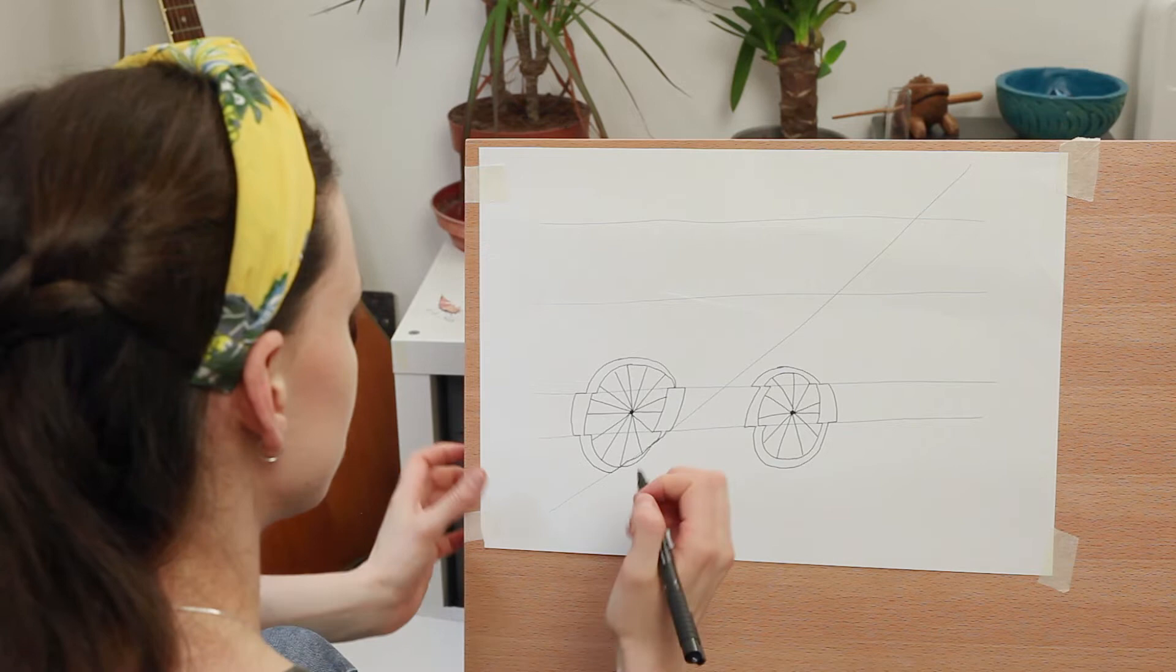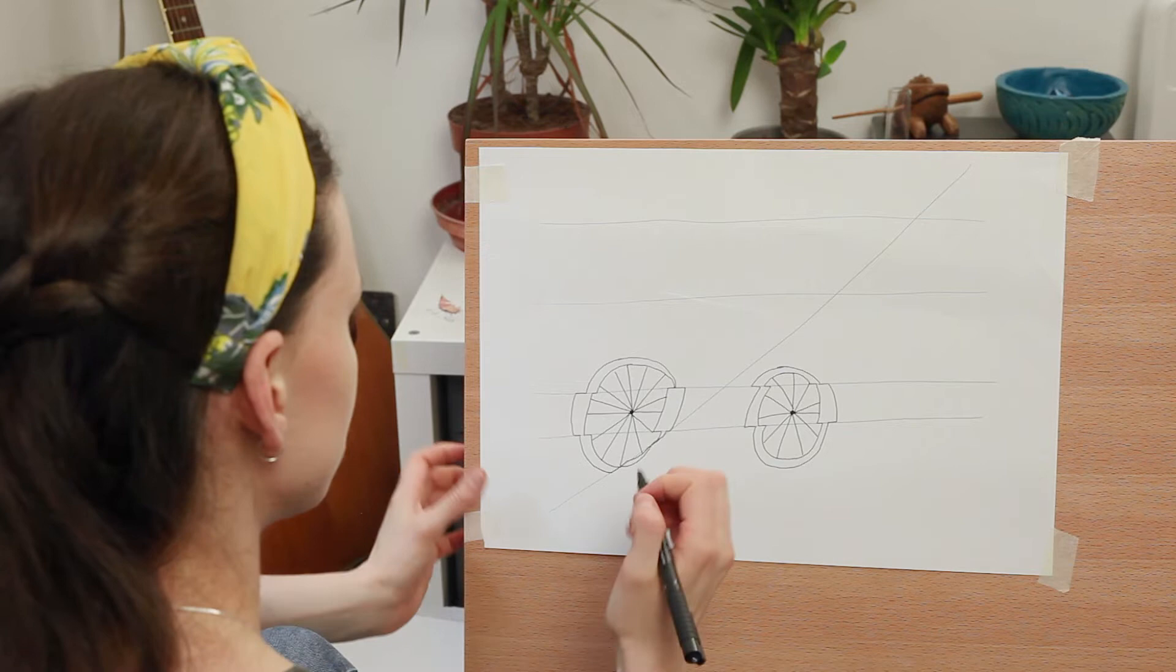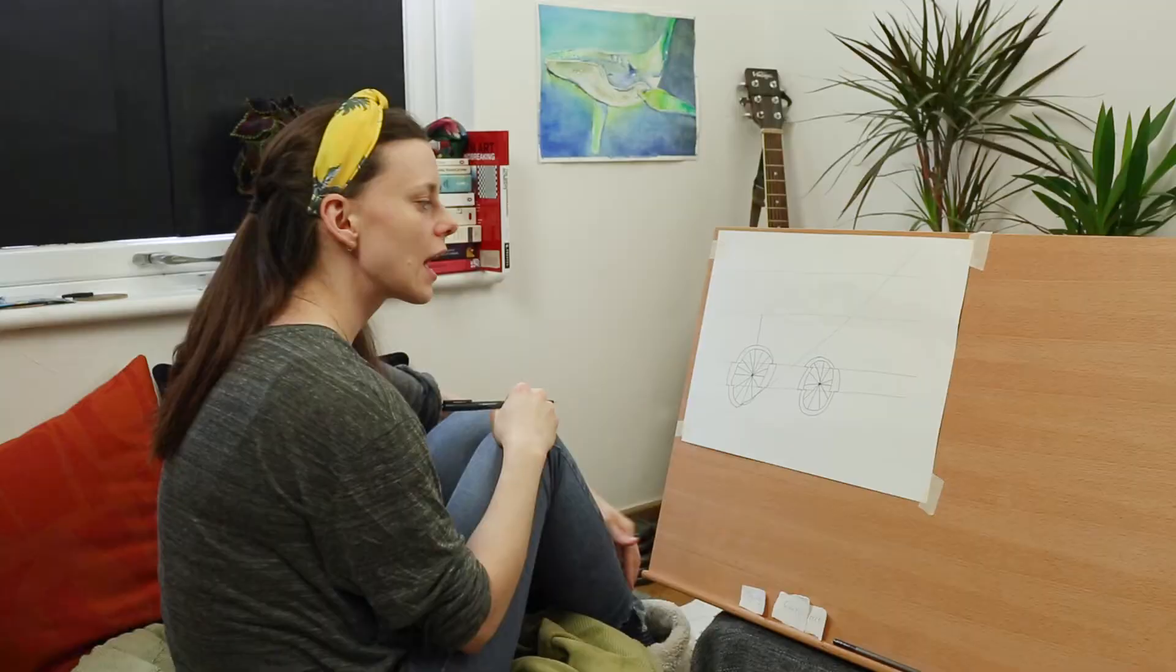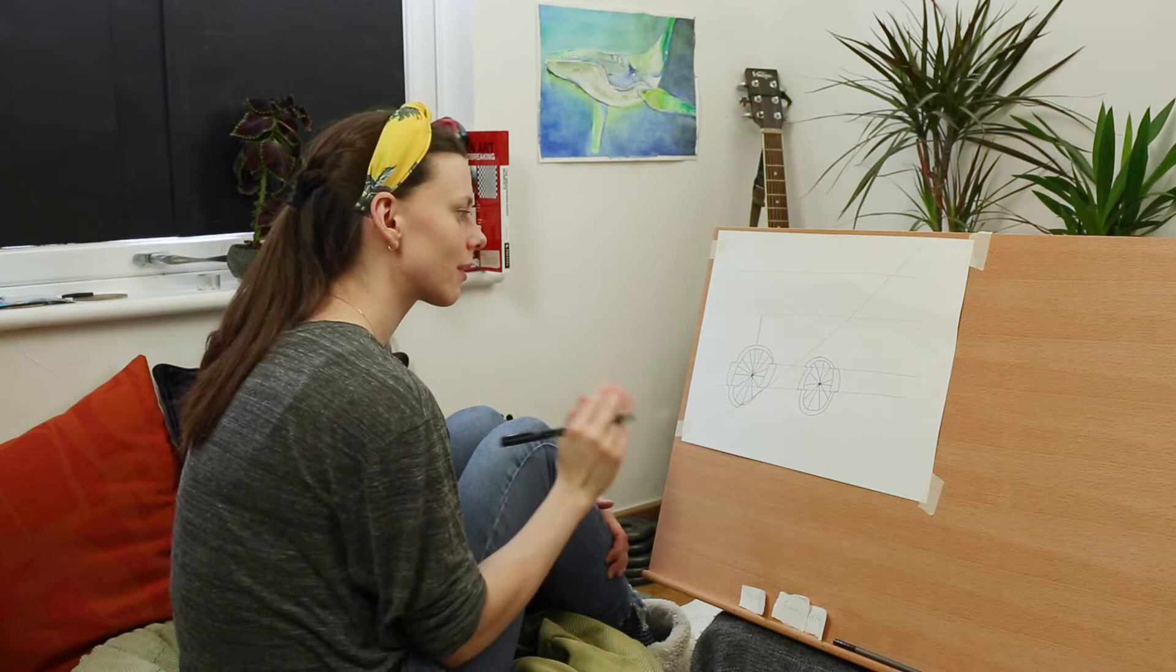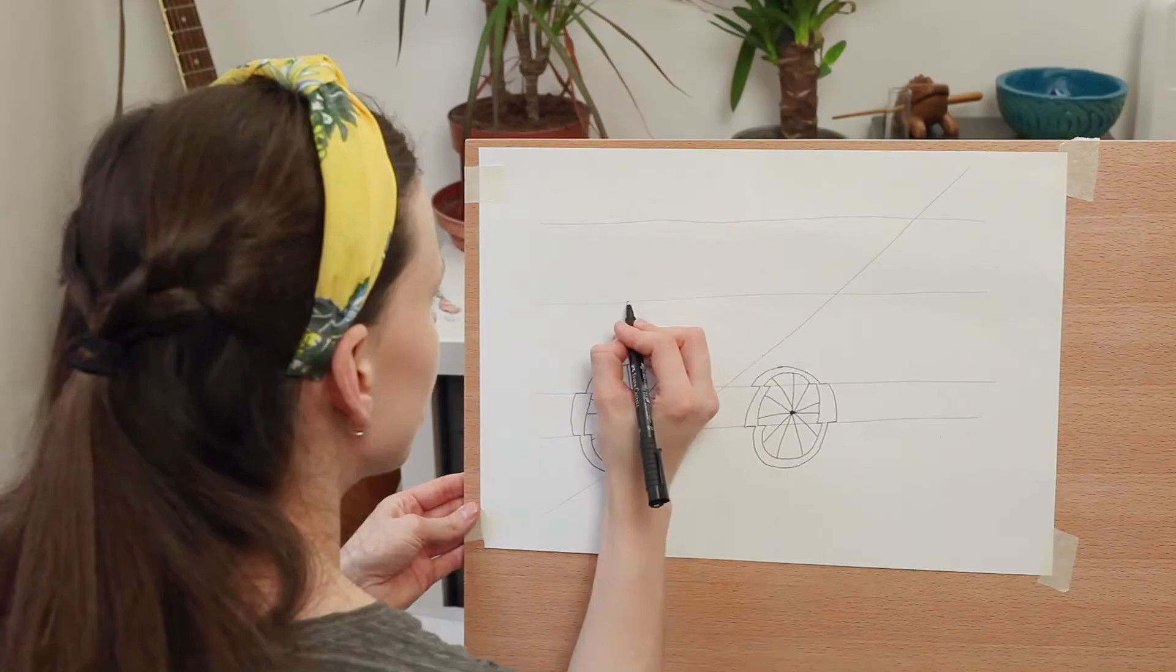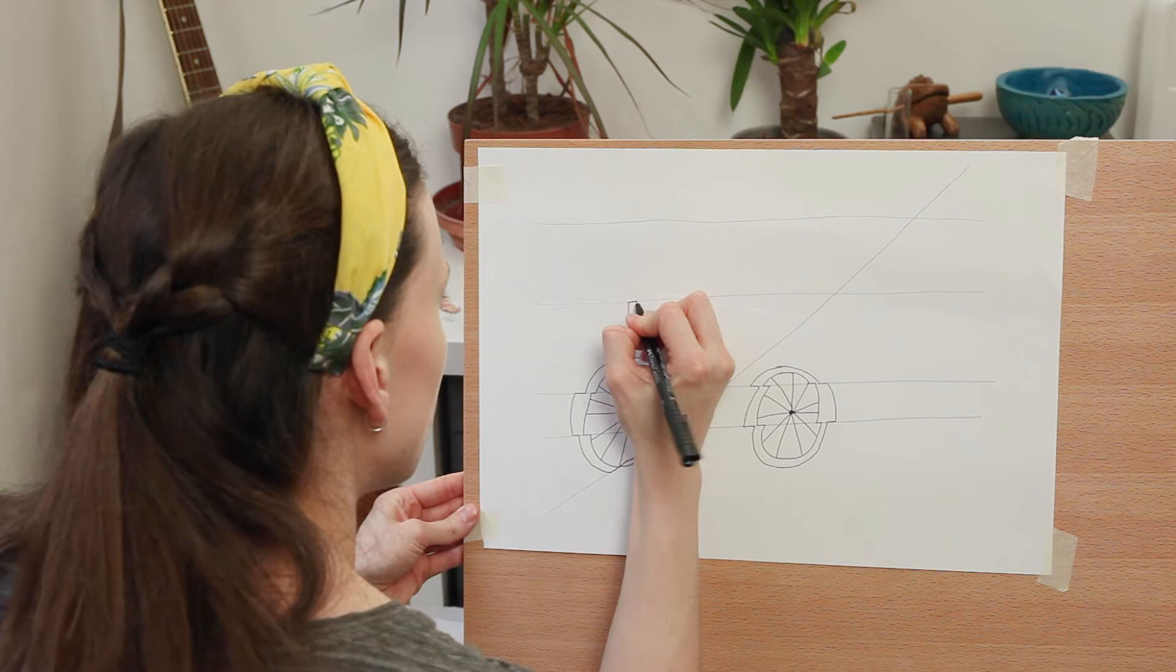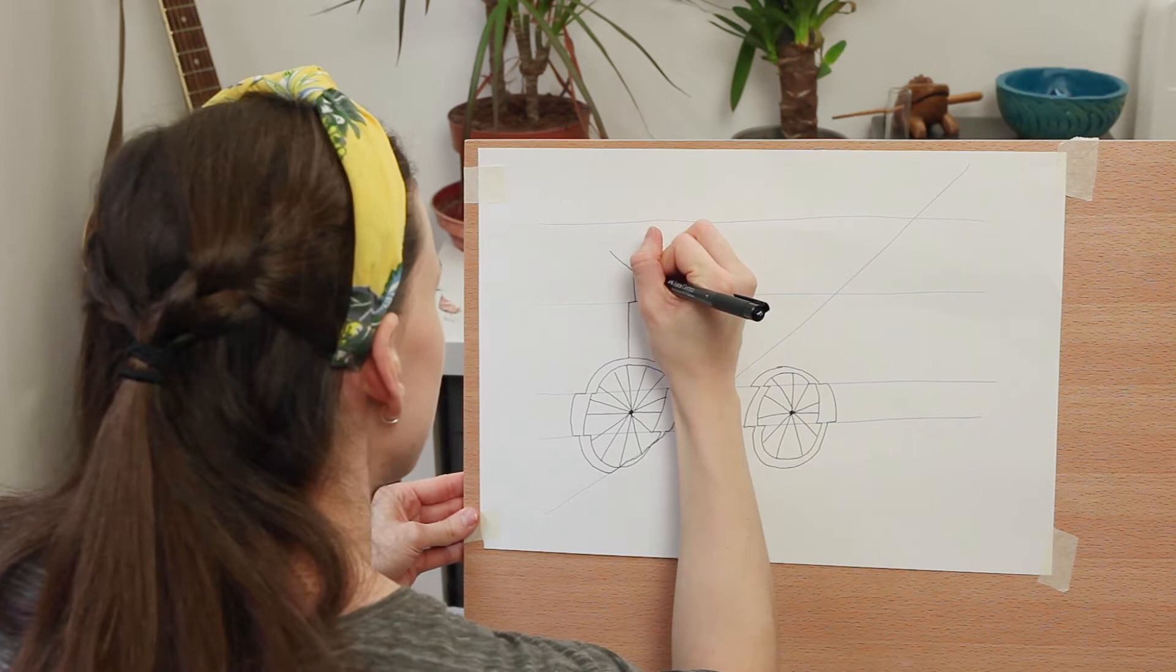So now I'm going to do my handlebars. So I've got one line that goes up from here. Because my handlebars and my frame are a main point of the bike, I am going to move along the line whenever I get to it. So I've got to this line. I'm going to move along and then I'm going to go up a bit further. I'm then going to give a really simple frame, my handlebars like that.